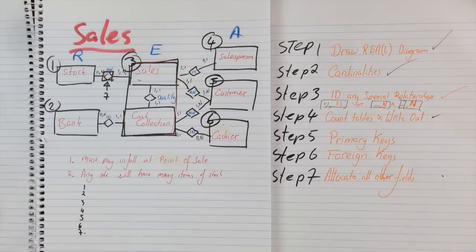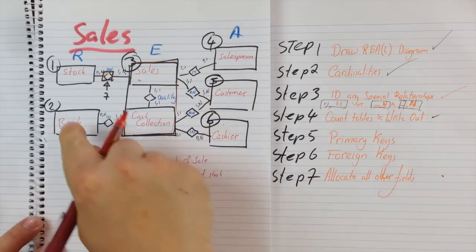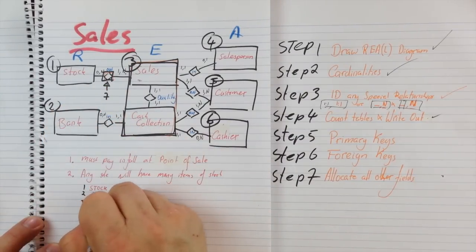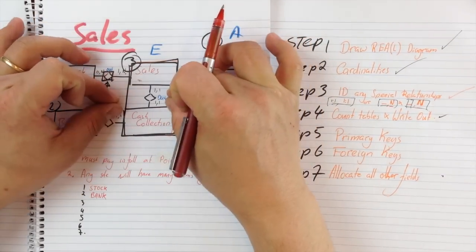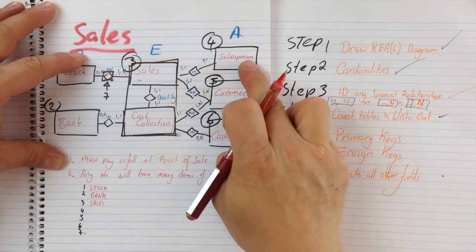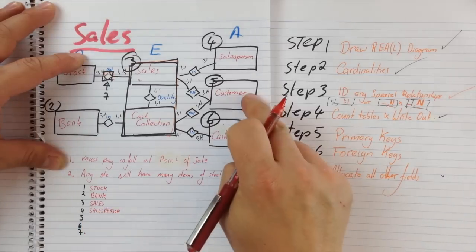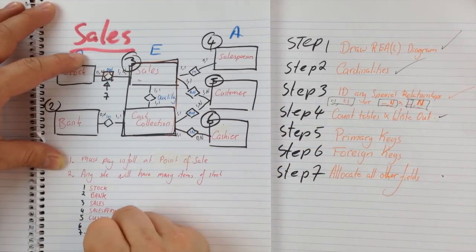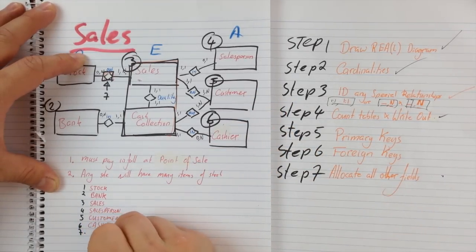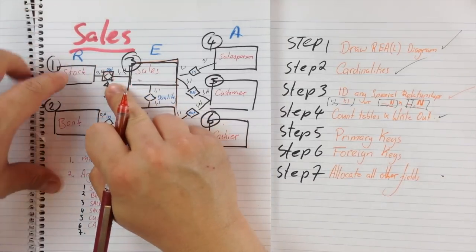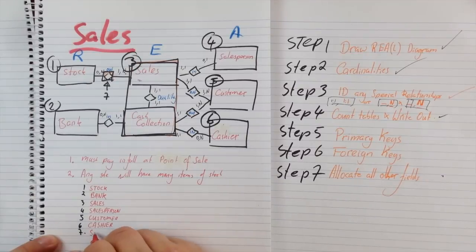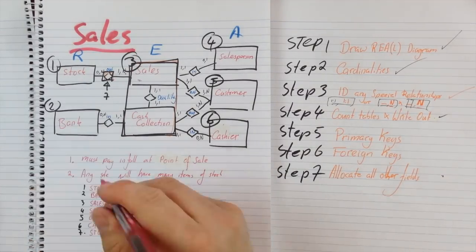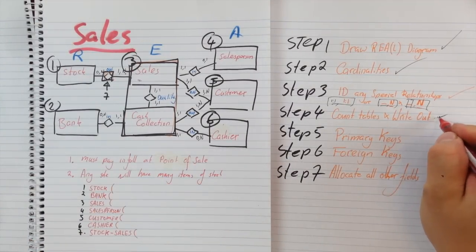Now I am going to write the names of the tables in red just to make this nice and easy. The first one is going to be stock, the next one is going to be bank, the next one is going to be sales — I'm just going to call it sales because sales and cash collection have been collapsed into a single item. The next one is going to be salesperson, then customer, then cashier, and the final one is going to be an amalgam between stock and sales, so we're just going to call this stock-sales. We have now completed step 4.